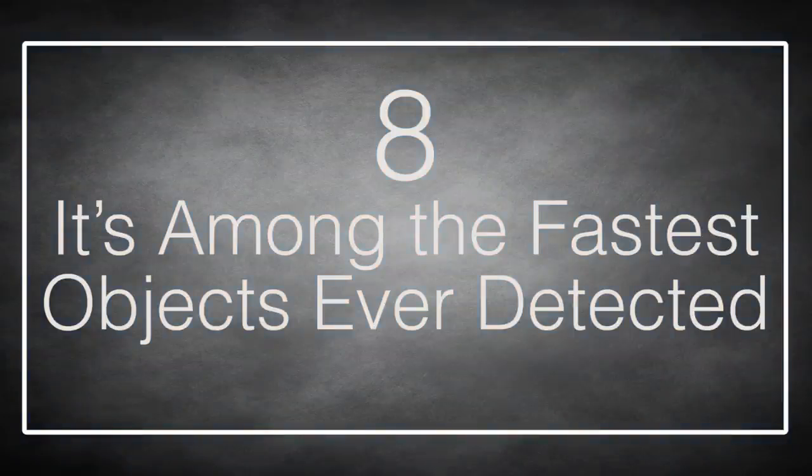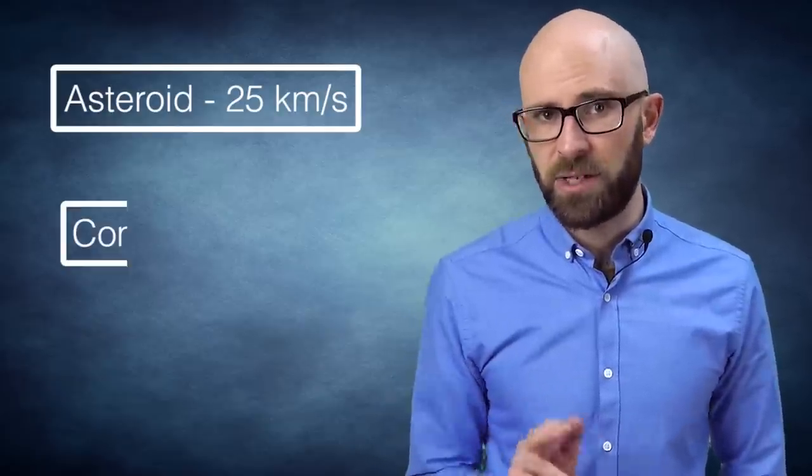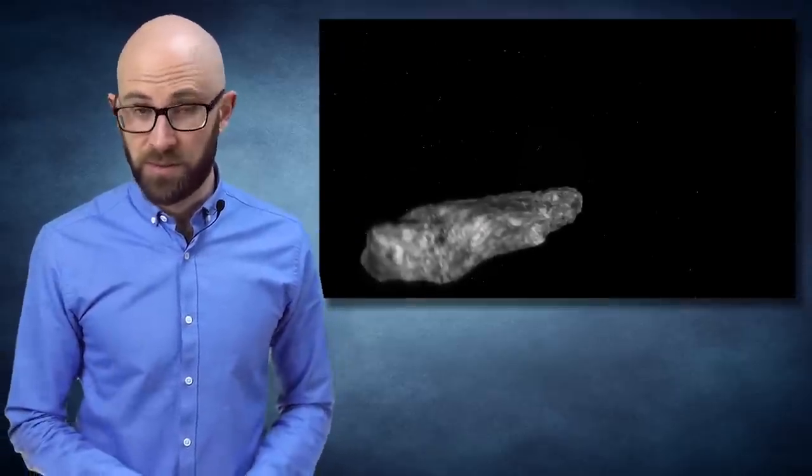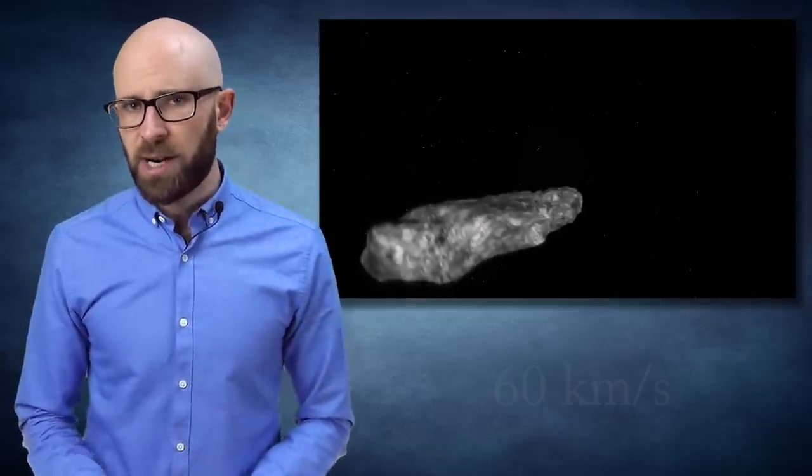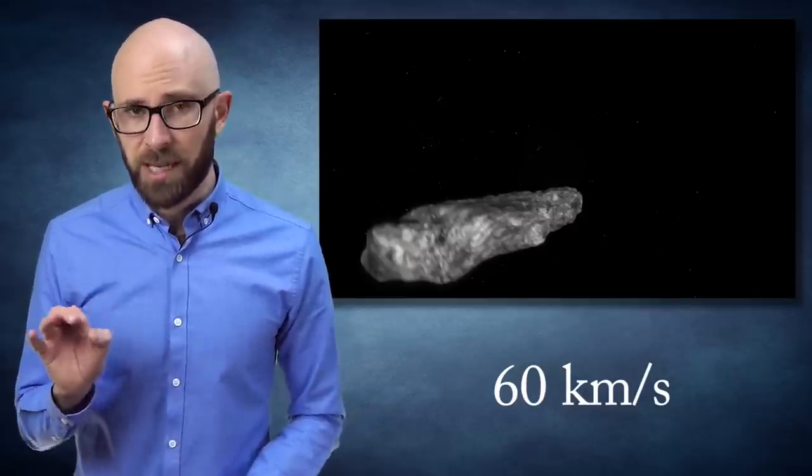Number 8. It's Among the Fastest Objects Ever Detected. One of the most surprising things about Oumuamua was its incredible speed. The average asteroid travels at 25 kilometers a second and the average comet at 40 kilometers a second relative to the Earth. But when Oumuamua was discovered in October of 2017, it was going an impressive 60 kilometers a second relative to the Earth and only picking up speed as it approached the Sun.